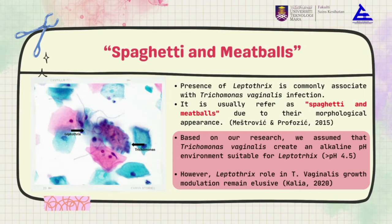Besides that, Trichomonas is an obligate parasite, so it lacks the ability to synthesize many micromolecules de novo, and will acquire them through phagocytosis of host and bacterial cells, including Lactobacilli. This will create a pH favorable to Leptothrix growth. However, we cannot say this is the definitive reason why Leptothrix is associated with Trichomonas, since Leptothrix's role in Trichomonas vaginalis growth modulation remains elusive.